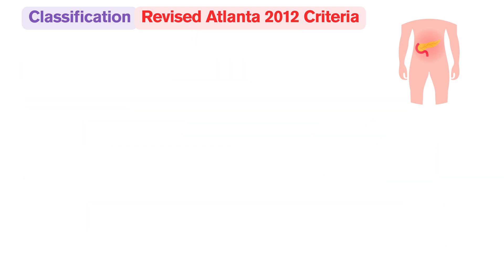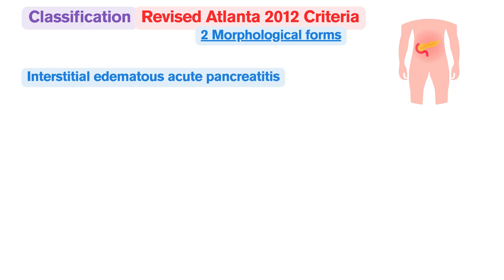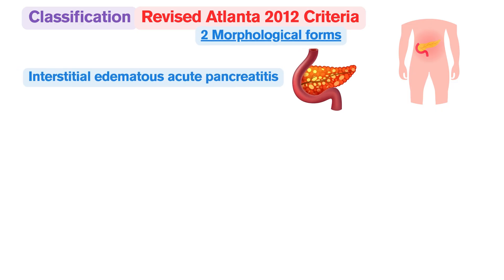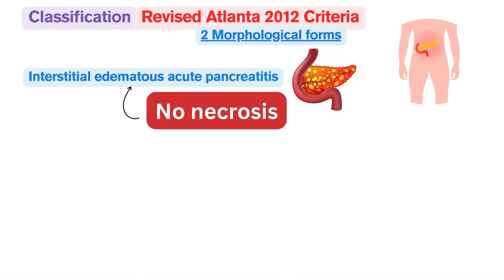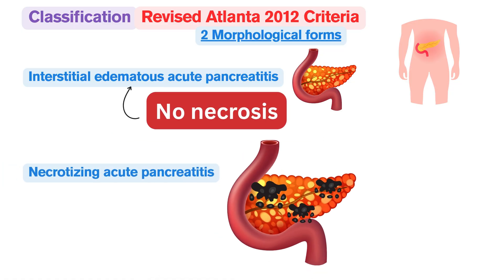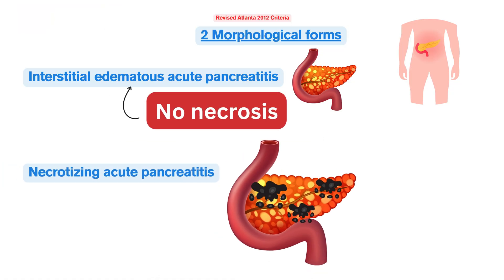Morphologically, the Atlanta classification divides acute pancreatitis into two forms: interstitial edematous acute pancreatitis, characterized by inflammation of the parenchyma without areas of necrosis, and necrotizing acute pancreatitis, which is associated with a more severe form of the disease.